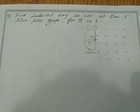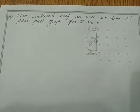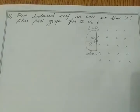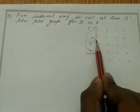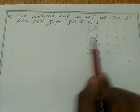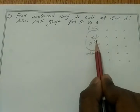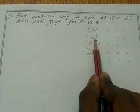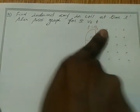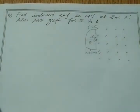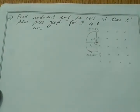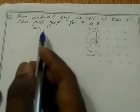Third problem: find induced EMF in a coil at time t, and plot a graph for i versus t. The coil has a fixed end at the center and is placed adjacent to a cross magnetic field. It starts to rotate with angular velocity omega about the fixed end. From the definition omega = theta/t, we get theta = omega × t.